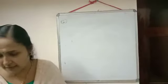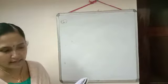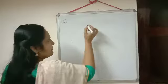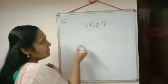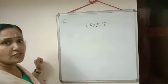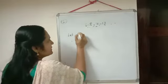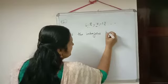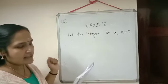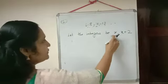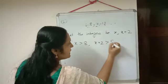Question number 2: find all pairs of consecutive even positive integers, both of which are larger than 8. Even numbers come as 6, 8, 10, 12 — with a difference of 2. So let the consecutive even integers be x and x plus 2. Now the condition: both numbers should be greater than 8, so x should be greater than 8 and x plus 2 should also be greater than 8. The second condition: their sum is less than 25, so x plus x plus 2 should be less than 25.